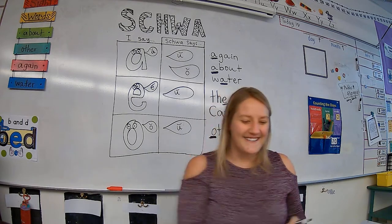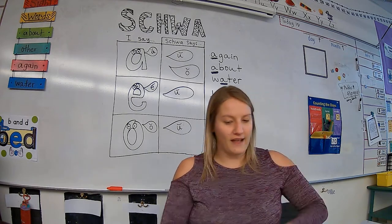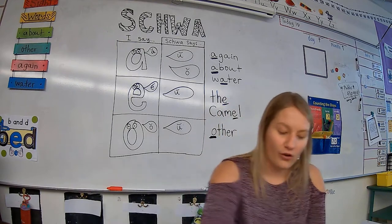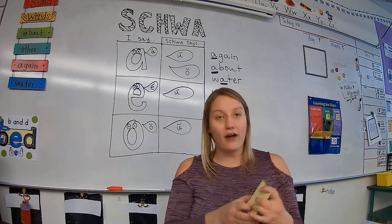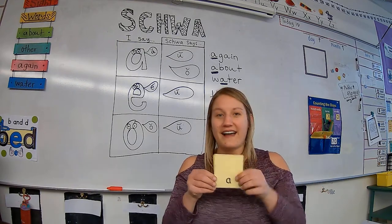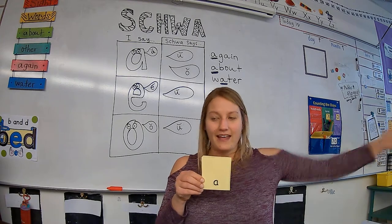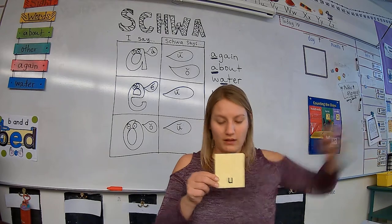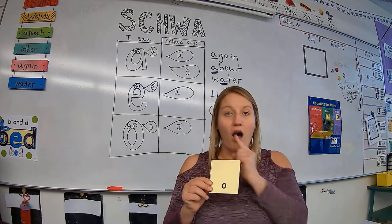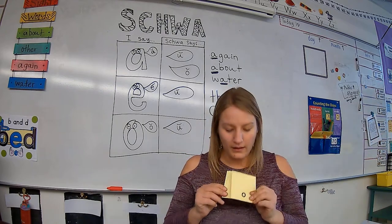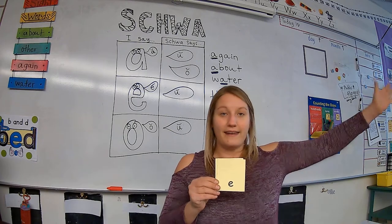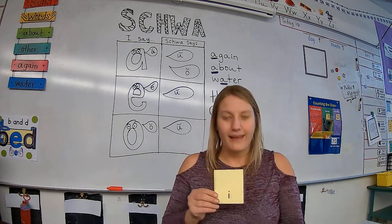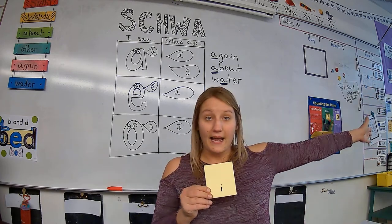And a schwa is a type of a vowel sound. So far we have learned that our vowels have two sounds. We have A and A, U and U, AH and O, EH and E, and I and I.